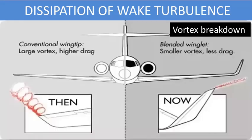Winglets or sharklets are upward or downward curved extensions at the wingtips. Winglets reduce the induced drag caused by lift, thus minimizing wake turbulence.